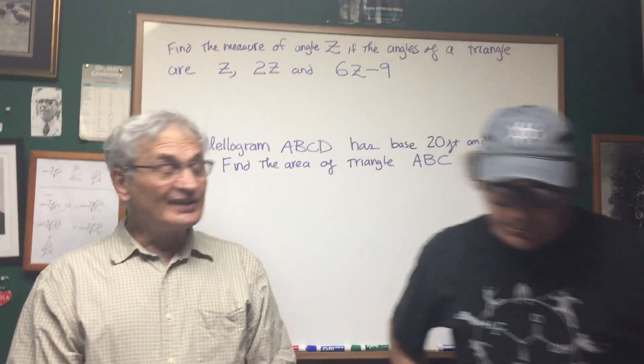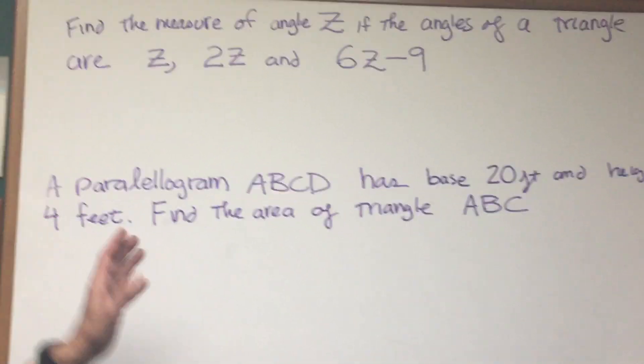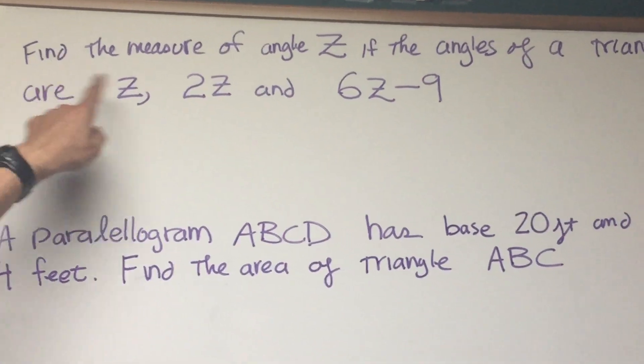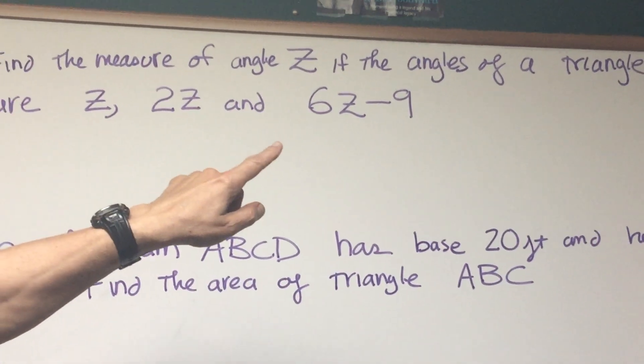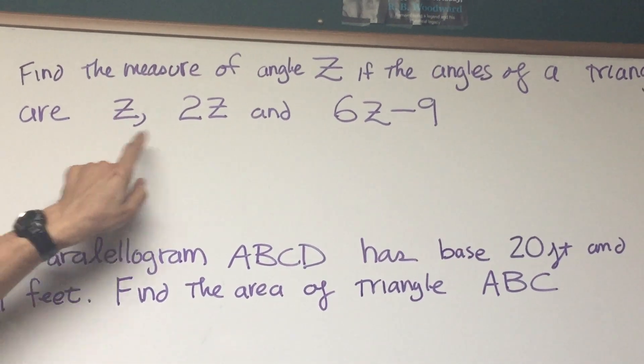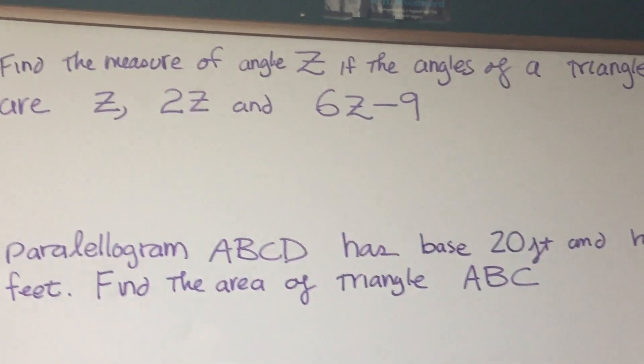All right, professor. Okay, let's look at this first problem. A little bit of triangle angles. Find the measure of angle Z if the angles of a triangle are labeled Z, 2Z, and 6Z minus 9.